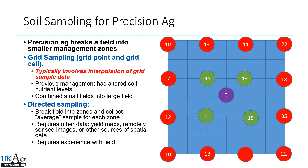Directed sampling, most commonly called zone management, is probably the best way to do precision ag management, but it requires other data — yield maps, remote sense imagery, soil texture, elevation, or topography. You need experience with that field to know if the zones make sense, and someone has to work with each field individually to set them up. When commercial folks come in to sample fields, it's most common to use the grid approach because the person doesn't know the field and can just send an untrained sampler on a four-wheeler to collect the grid sample.